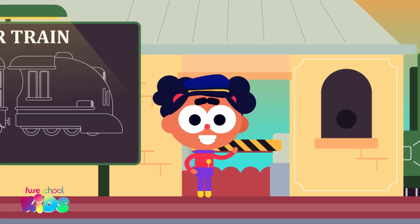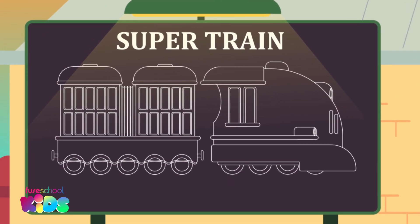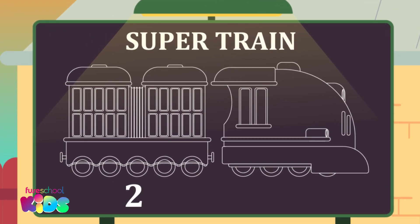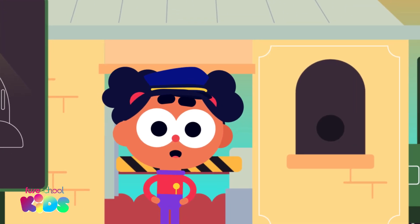Hello everyone, I'm Ava. Today we are going to build a super train by counting in twos, fives and tens. All aboard!